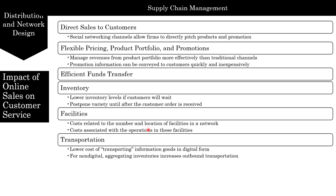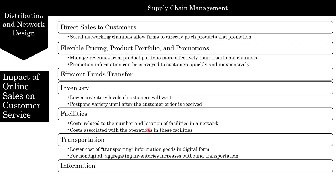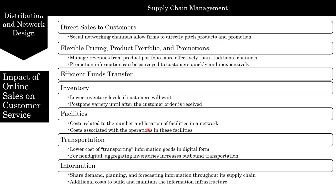The internet has significantly lowered the cost of transporting information goods in digital form, like movies, music, and books. For non-digital products, aggregating inventory increases outbound transportation relative to inbound transportation. Regarding information, an online seller can share demand information throughout the supply chain, improving visibility. The internet can be used to share planning and forecasting information within the supply chain, further improving coordination. This helps reduce overall supply chain costs and allows you to match supply and demand better.